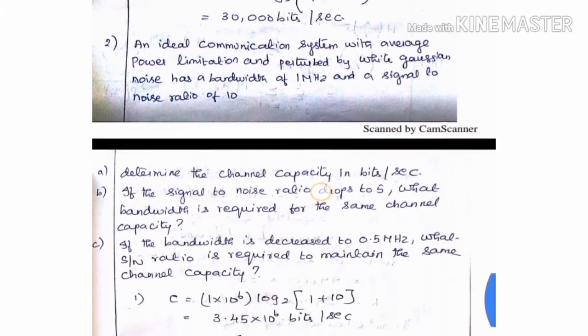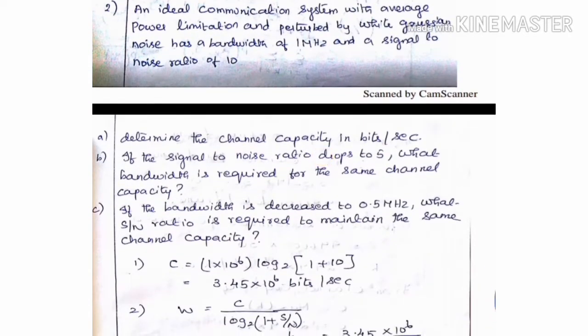Problem 2: An average communication system with average power limitation, perturbed by white Gaussian noise, has a bandwidth of 1 MHz and a signal-to-noise ratio of 10. First, find the channel capacity requirement.